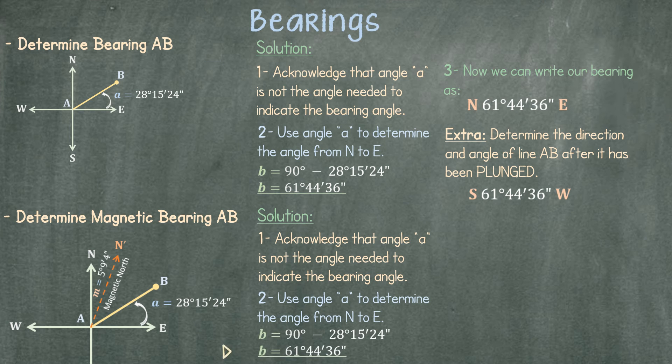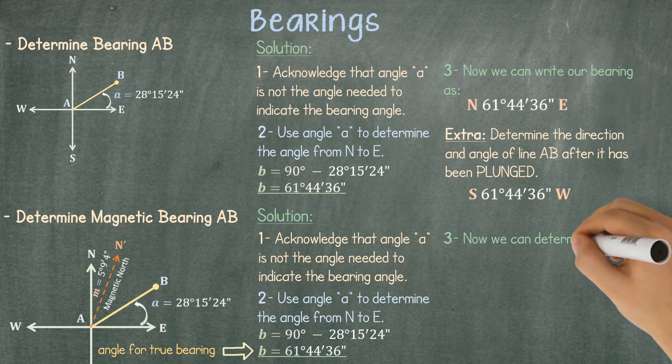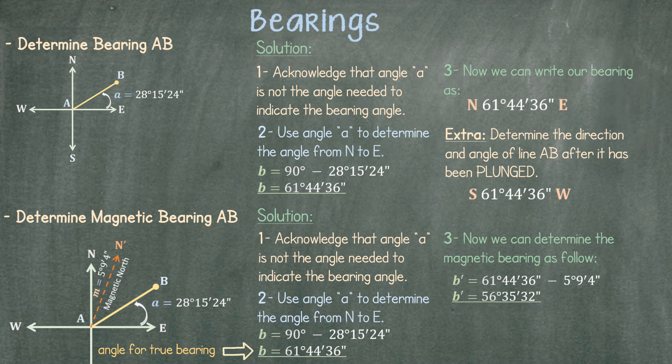But this time, this angle is not the final value that we have been asked for, as this is for a true bearing. We can determine the angle for the magnetic bearing as follow. Now our magnetic bearing can be written as follow: North 56 degrees 35 minutes 32 seconds east.